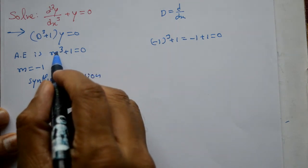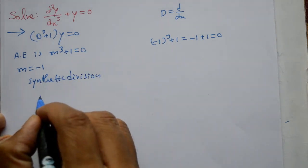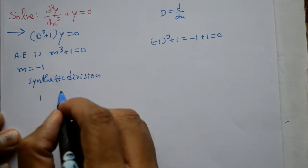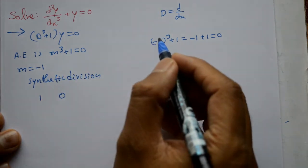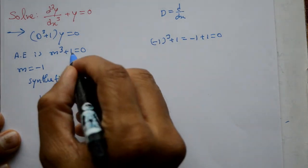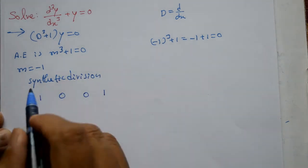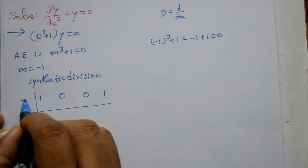Synthetic division. So, m³ plus m e. Iska m³ ka coefficient kya hai? One hai. m square nahi hai. Ah, phir bhi haum lena hai. Iska m² ka coefficient 0 aayega. Baad me, m aayega. m ka coefficient 0 aayega. Baad me, e 1 aayega. Is therah order me likhna hai. Ok. Thikai? Next.